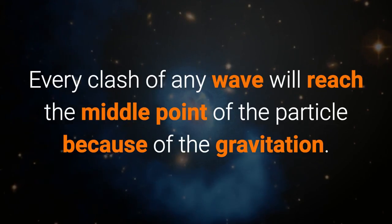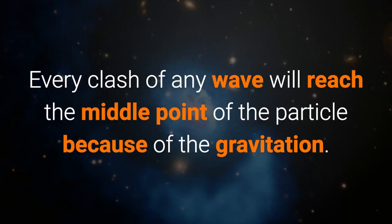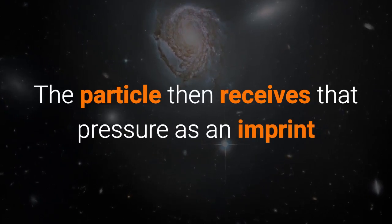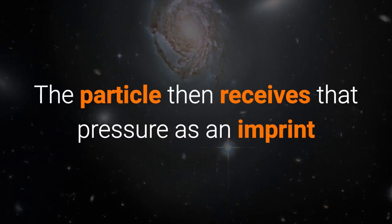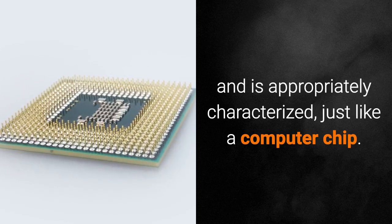Every clash of any wave will reach the middle point of the particle because of gravitation. The particle then receives that pressure as an imprint and is appropriately characterized, just like a computer chip.